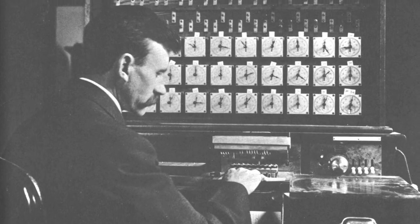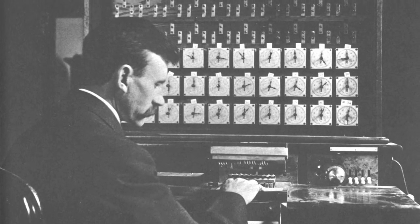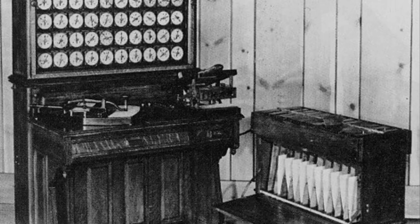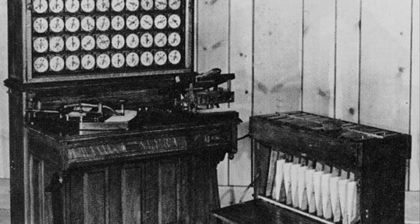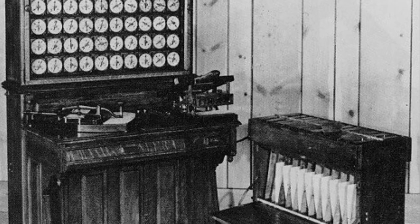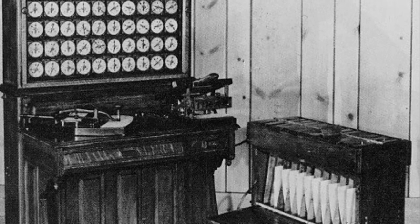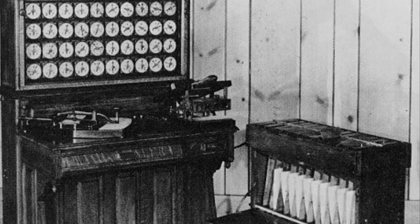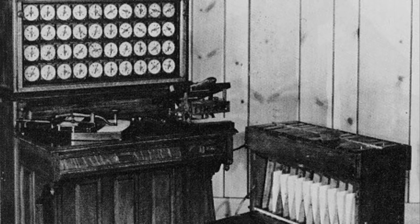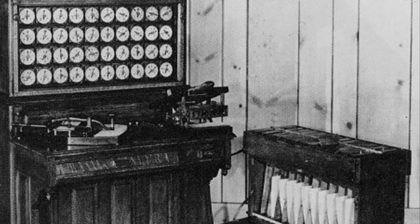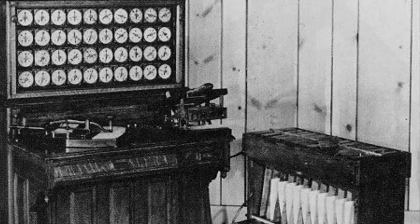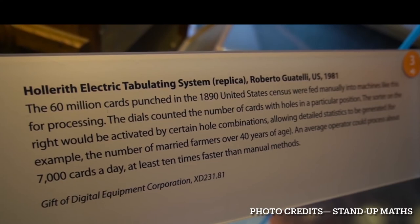Enter Hermann Hollerith. Inspired by punched railway tickets of the time, Hollerith devised a tabulating machine with a sorting box to help solve the census problem. This device was in many ways an ancestor which set the right path forward for the then world of computing. His idea was that data could be encoded by holes punched in a card and thereby counted and sorted electronically. Here's what the description of the replica at the Computer History Museum, USA reads.